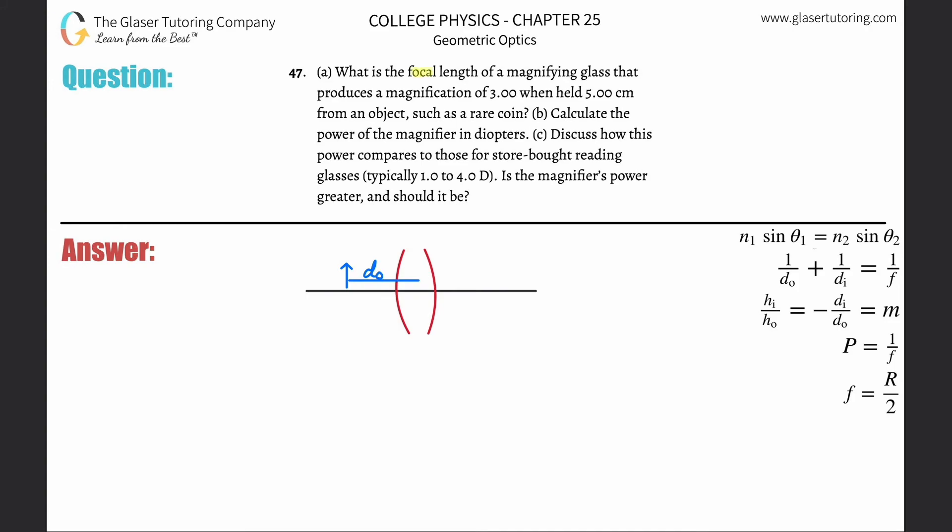Number 47, letter a: What is the focal length of a magnifying glass that produces a magnification of three when held five centimeters from an object such as a rare coin?